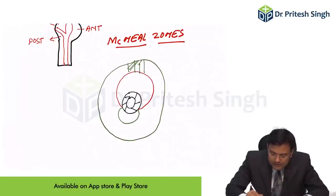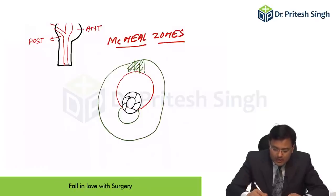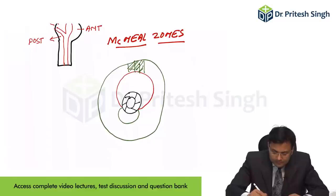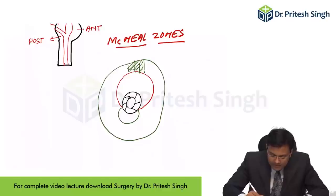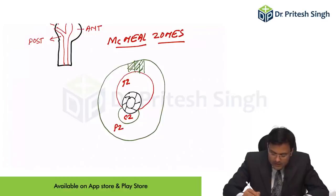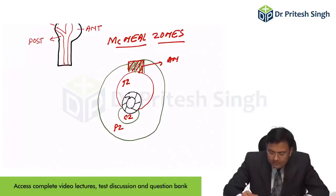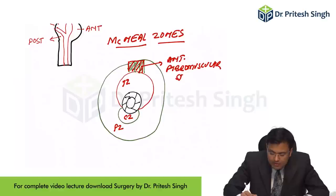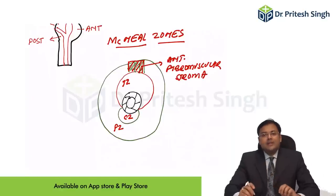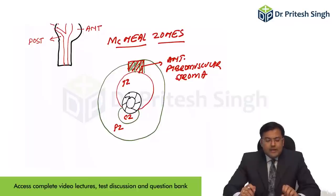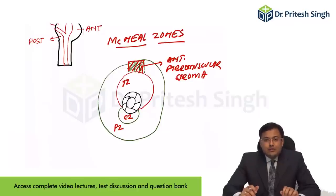Here there is the anterior fibromuscular stroma. So the zones are: transition zone, central zone, peripheral zone, and the anterior fibromuscular stroma. There are three zones — peripheral zone, transitional zone, central zone — and the anterior fibromuscular stroma.